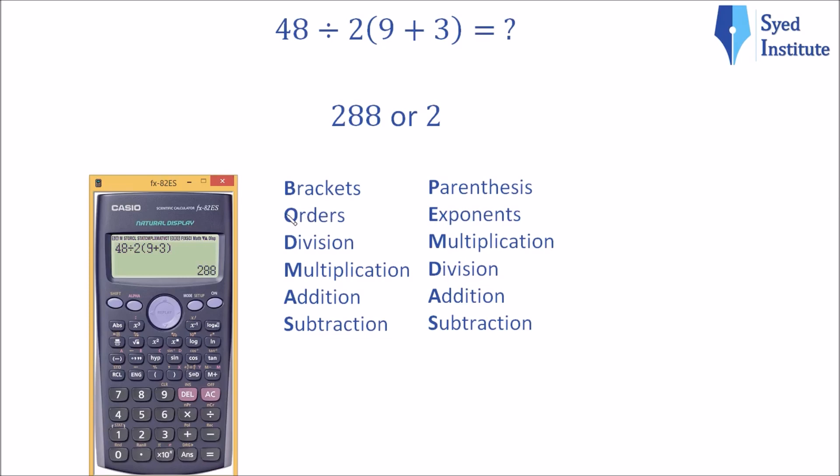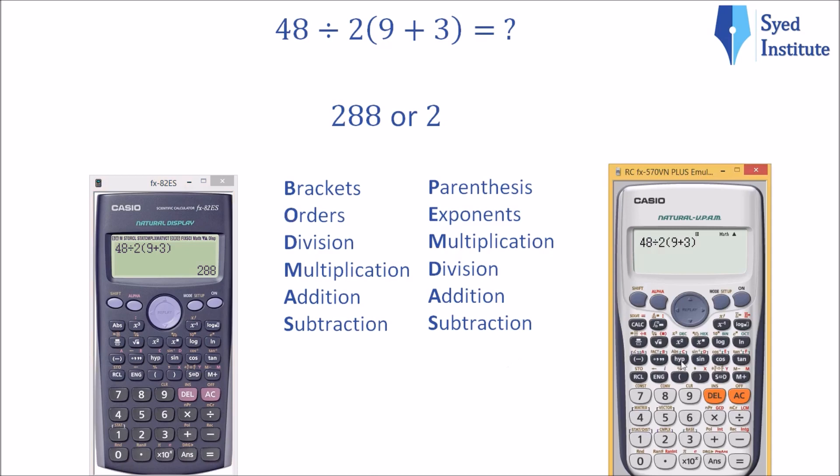I have another calculator, so let me just check that. We get 2, and so we can see that the two calculators disagree. So why does this happen? We will get into that later.